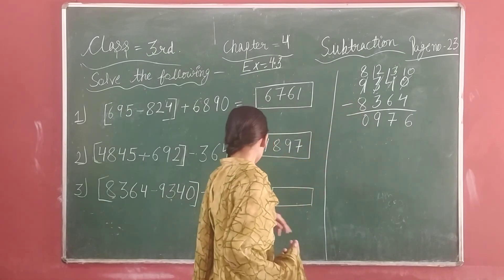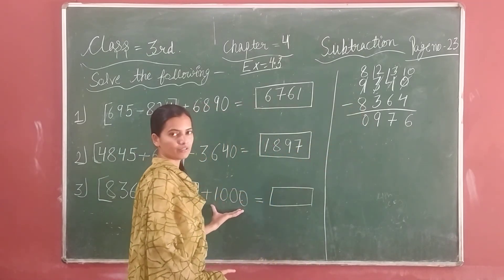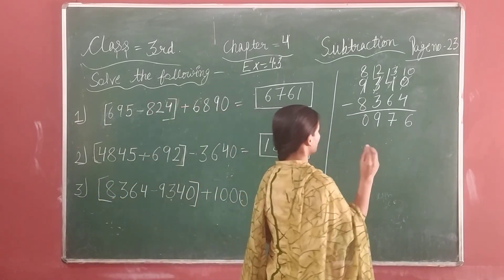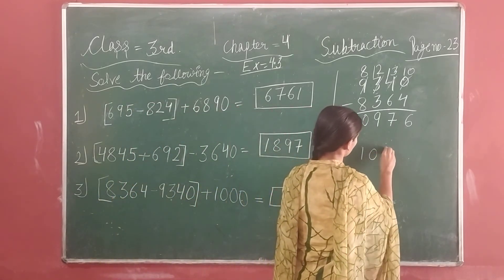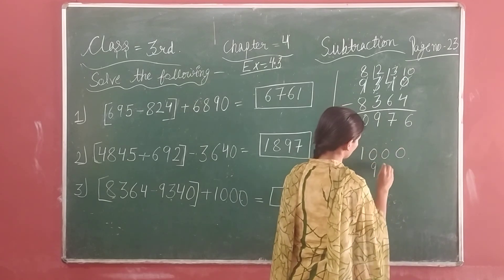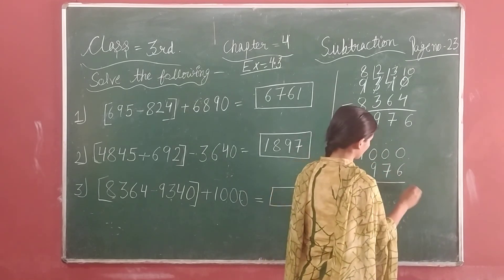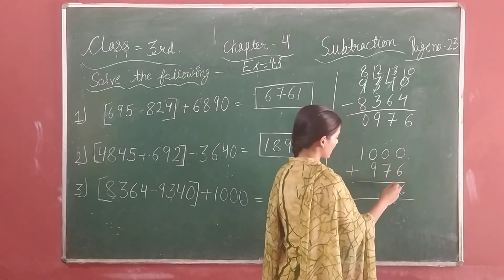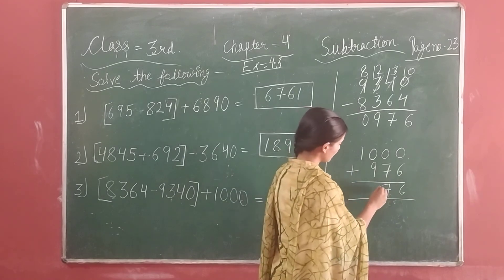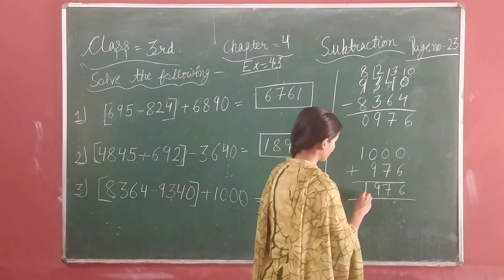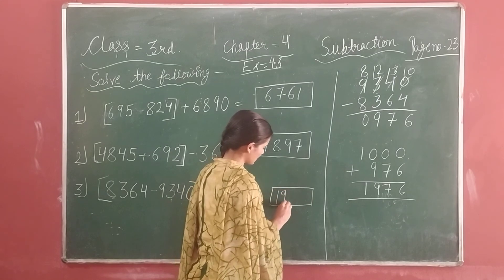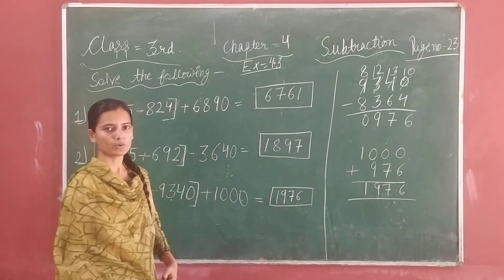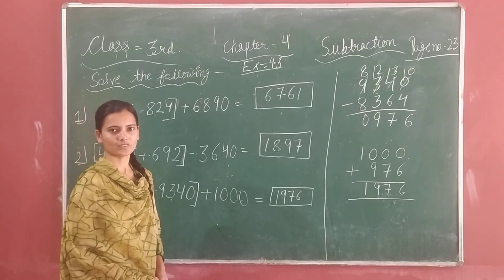We have to keep it here: 1,000. 1,000 is 966, so we have to keep it here: 1,000. And then 970 is 6. 0 plus 6 is 6; 0 plus 7 is 7; 0 plus 9 is 9; and then 1. So students, now next question. Thank you.